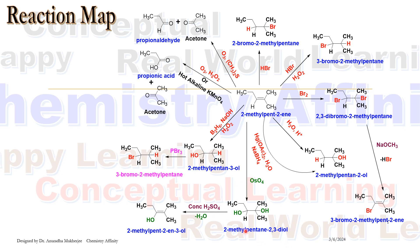When this compound is treated with concentrated sulfuric acid, dehydration takes place. OH from the right hand side and hydrogen from the left hand side leave as water, and we get an alkene molecule. It is 2-methyl pent-2-en-3-ol.